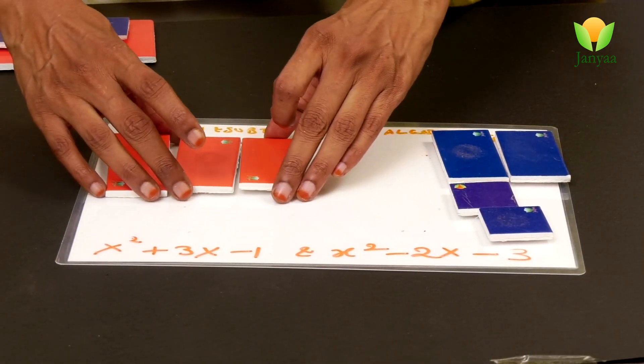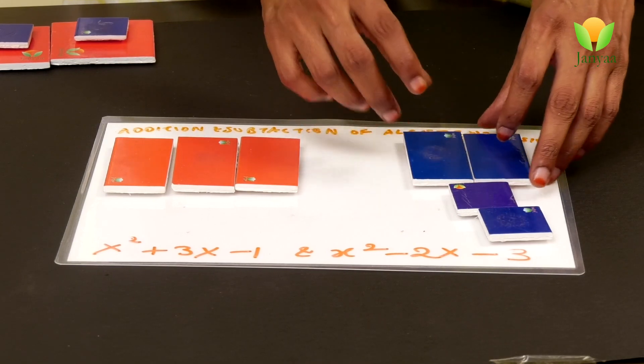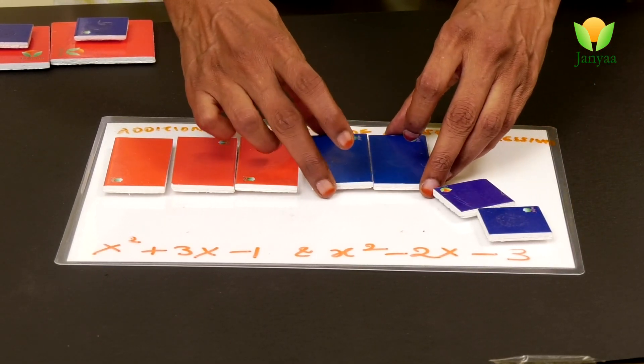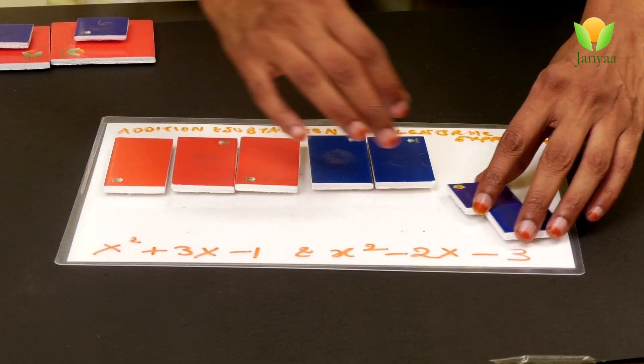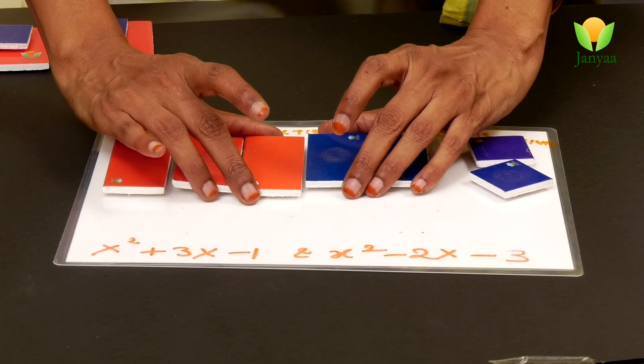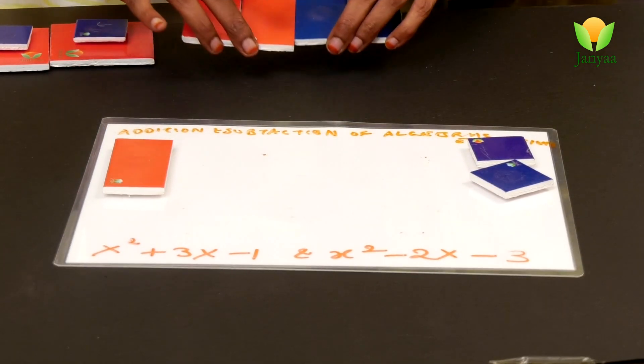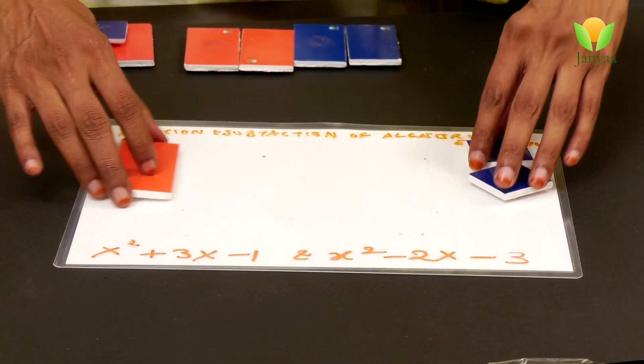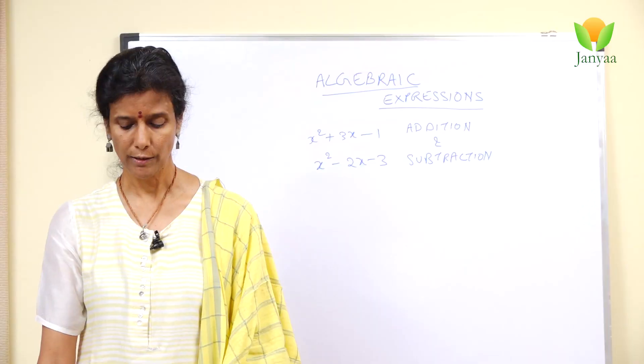What am I left with? 3x minus 2, right? And this 2. So what is 3x minus 2x? These two negate each other, correct? I am going to take these two out, and we are left with x minus 2.